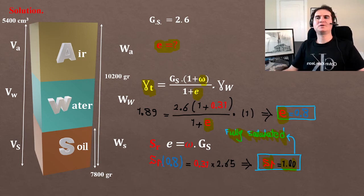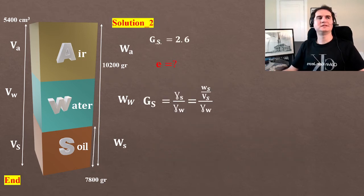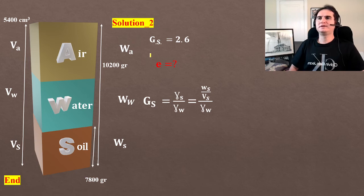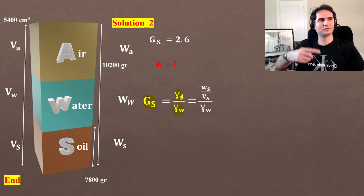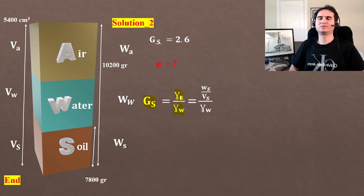Yet we can solve this problem in a different approach, which is to my understanding an easier solution. If we write the Gs equation, specific gravity is unit weight of soil over unit weight of water. Unit weight, if you expand gamma, is weight of soil over volume of soil over unit weight of water.